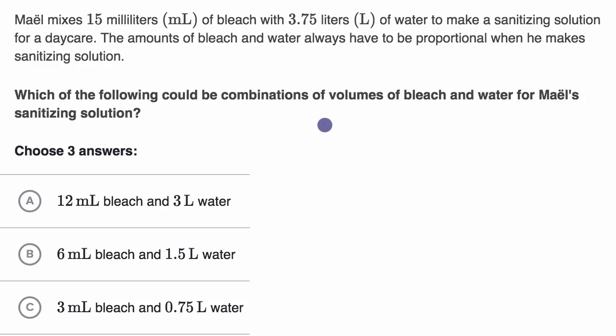So I'm gonna make a table here. So let's say this is bleach, bleach in milliliters. And let's say this is water in liters. And they tell us that he mixes 15 milliliters, where the unit here is milliliters, for every 50 milliliters of bleach, for every 3.75 liters of water.